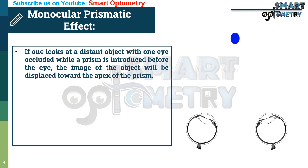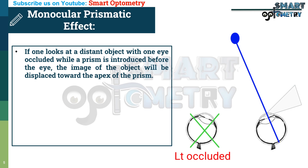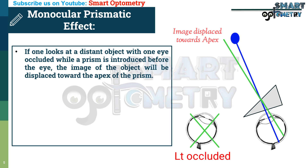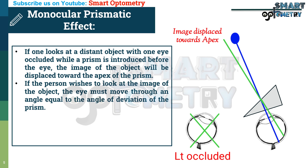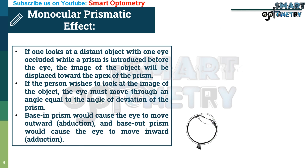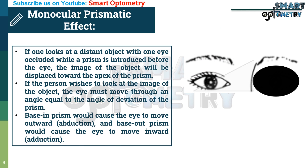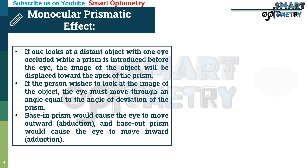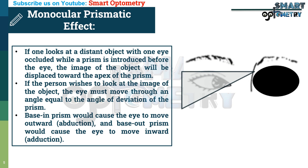For monocular prismatic effect: if one looks at a distant object with one eye occluded while a prism is introduced before the open eye, the image of the object will be displaced towards the apex of the prism. If the person wishes to look at the image of the object, the eye must move through an angle equal to the angle of deviation of the prism. A base-in prism would cause the eye to move outward (abduction) and a base-out prism would cause the eye to move inward (adduction).